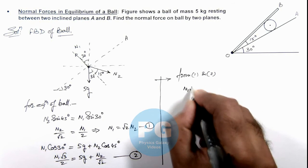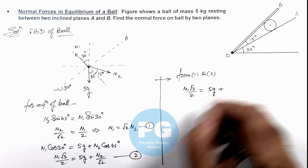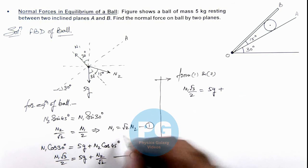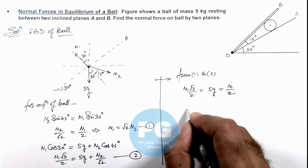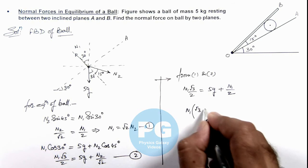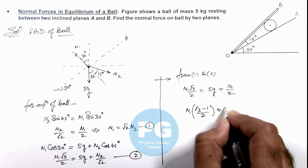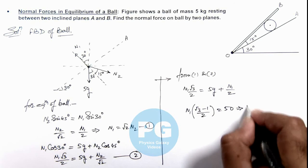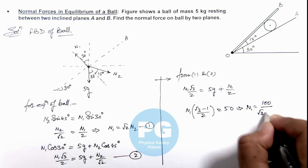So on simplifying, we are getting N₁ multiplied by (√3 - 1)/2 equals 5g, which can be written as 50. This implies the value of N₁ we are getting is 100/(√3 - 1).